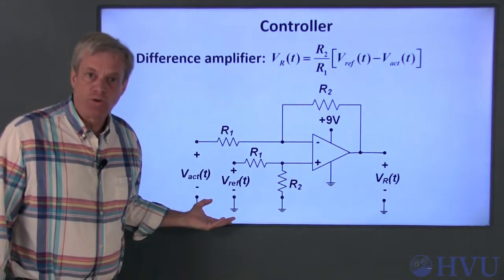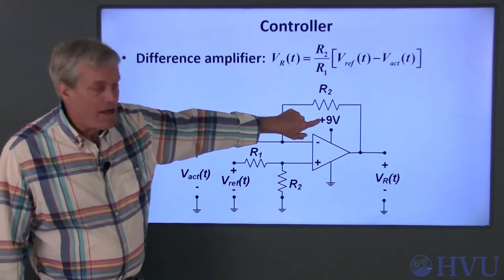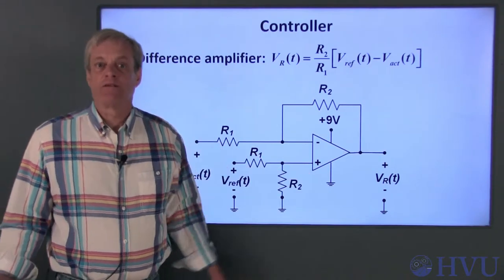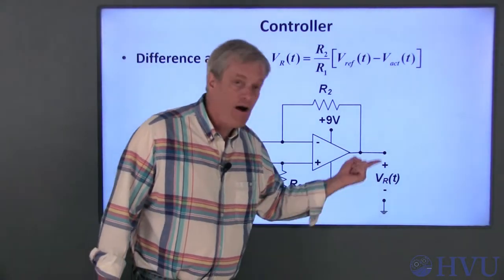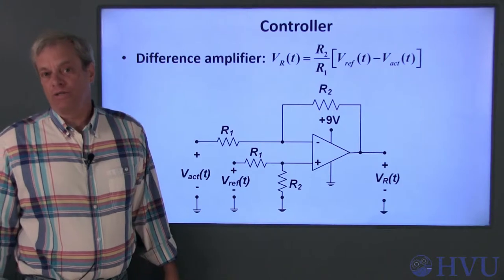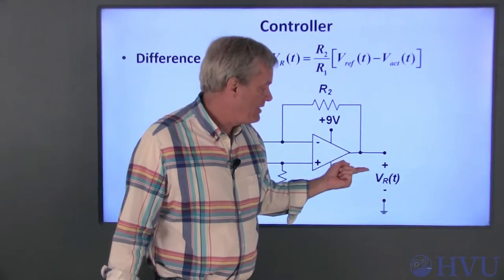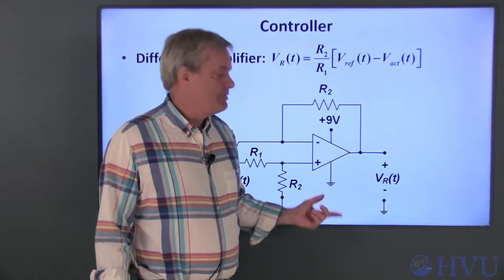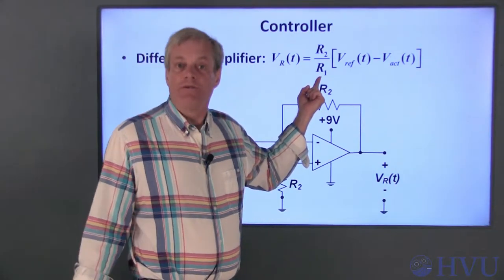Before I describe how this works as a controller, let's also talk about the op-amp supply voltages, because those are crucial to this circuit's operation. I'll use a 9V battery as the positive supply voltage, and I'm going to ground the negative supply voltage. This is important, since the rails set the limits on the output voltage. Grounding the negative supply means that the output voltage VR can't be negative. When the desired temperature is greater than the actual temperature, Vref minus Vact is positive, voltage is applied to the power resistor, and the resistor heats up. The greater the difference between the desired and actual temperatures, the greater the resistor voltage will be, and the faster the resistor will heat. Increasing the ratio R2 to R1 will also increase the rate of heat addition.